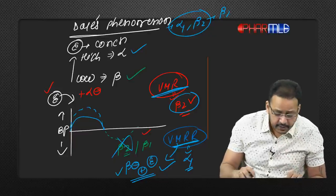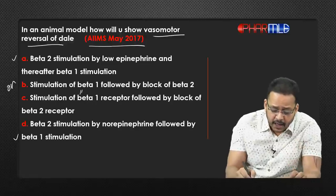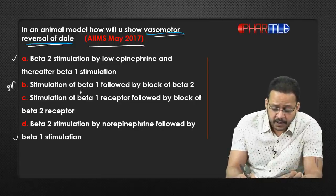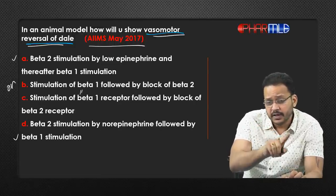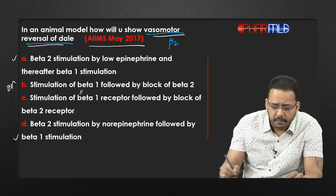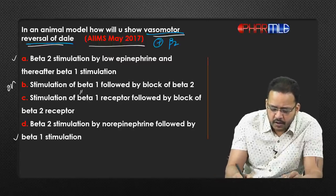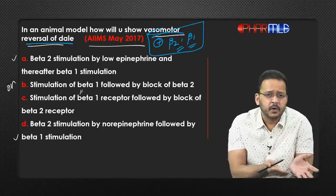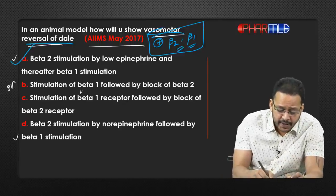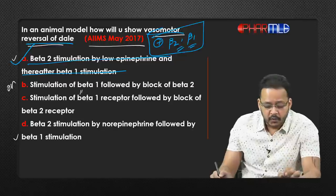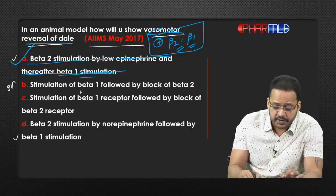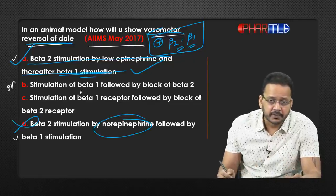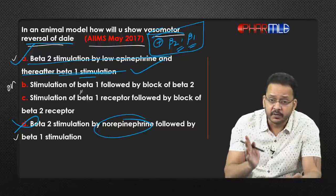Summary: Dale's phenomenon involves alpha-1 and beta-2 plus beta-1. Vasomotor reversal involves beta-2 only. Vasomotor re-reversal involves only alpha-1 because beta-2 is blocked. Back to the question: how will you show vasomotor reversal? Alpha-1 is blocked by alpha blocker — only beta-2 and beta-1 stimulation by epinephrine remain. Option A — stimulation of beta-2 by low-dose epinephrine followed by beta-1 stimulation — is the best answer. D cannot be the answer because Dale's phenomenon is not seen with norepinephrine, only with epinephrine.